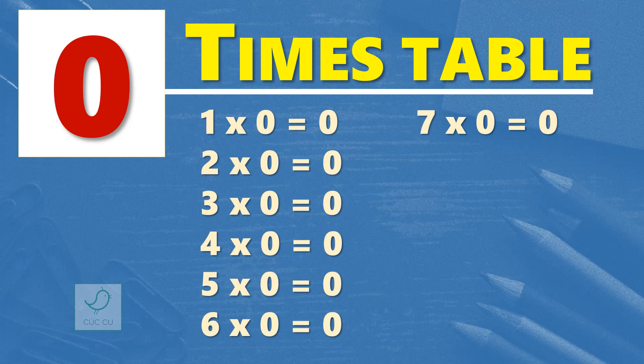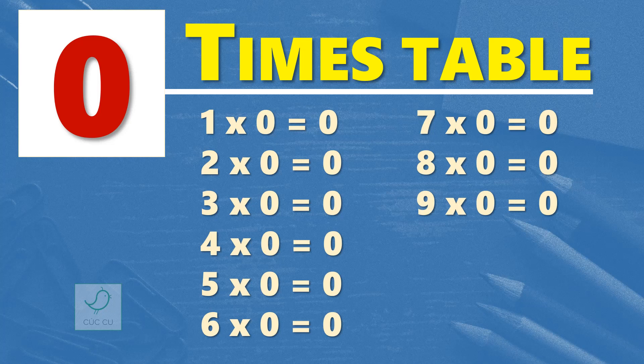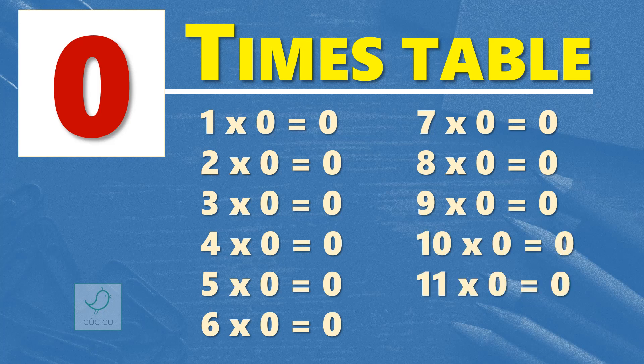8 times 0 is 0. 9 times 0 is 0. 10 times 0 is 0. 11 times 0 is 0. 12 times 0 is 0.